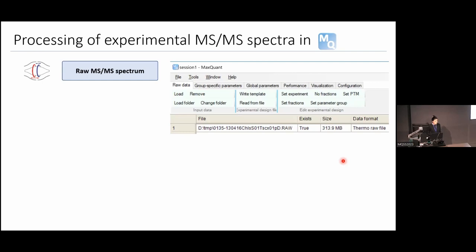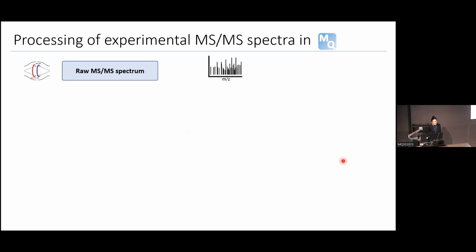The raw MS/MS spectra are quite populated with peaks. This is not a fully realistic view of an MS/MS spectrum, but what I'm trying to show is that the MS/MS spectrum is heavily populated with peaks — we have a lot of noise, and for example co-eluting peptide fragment peaks.